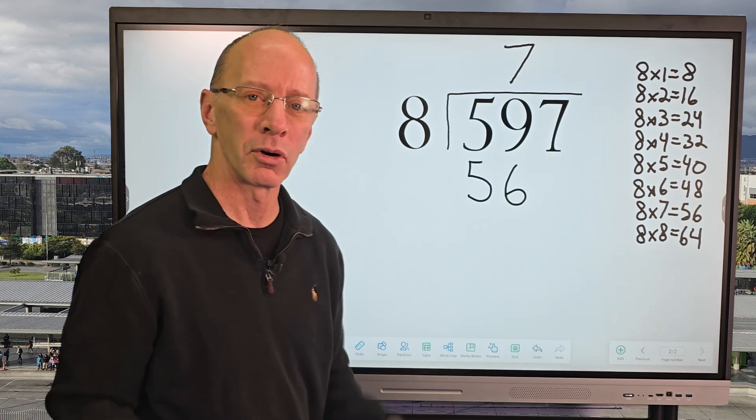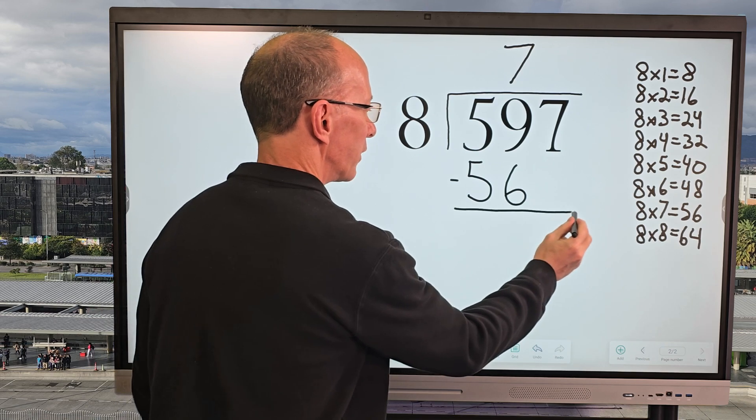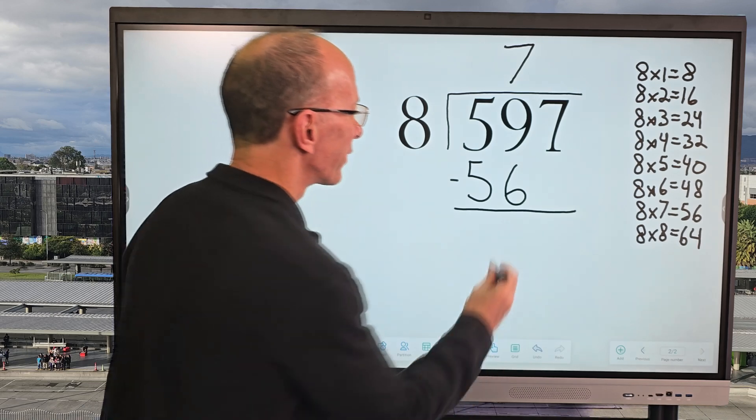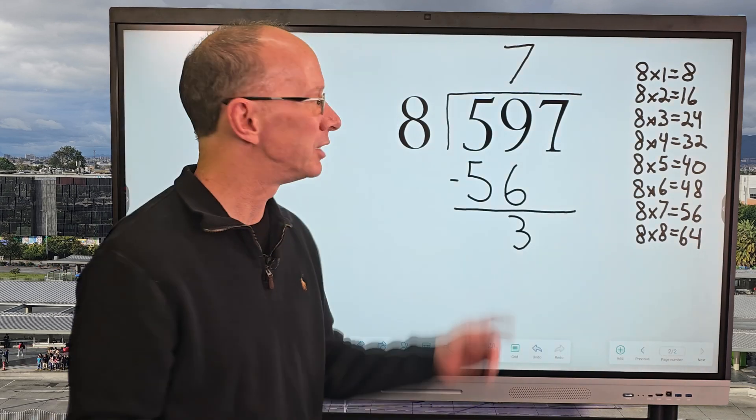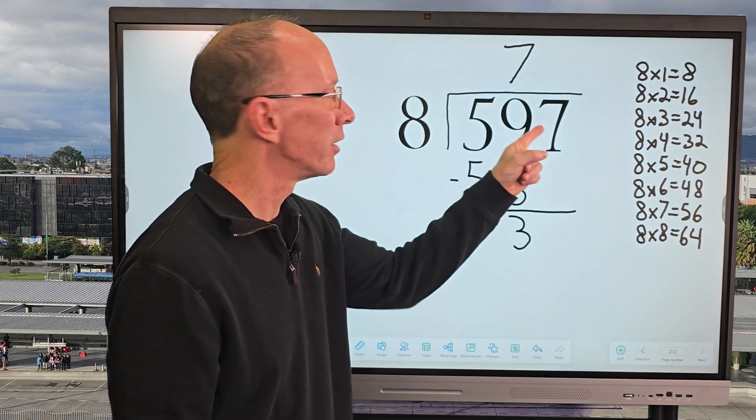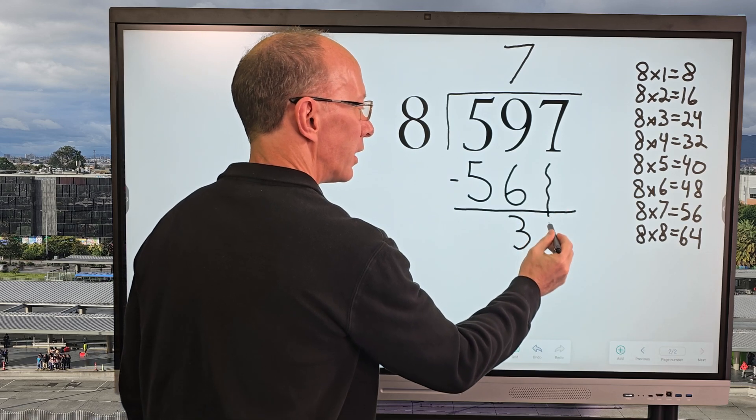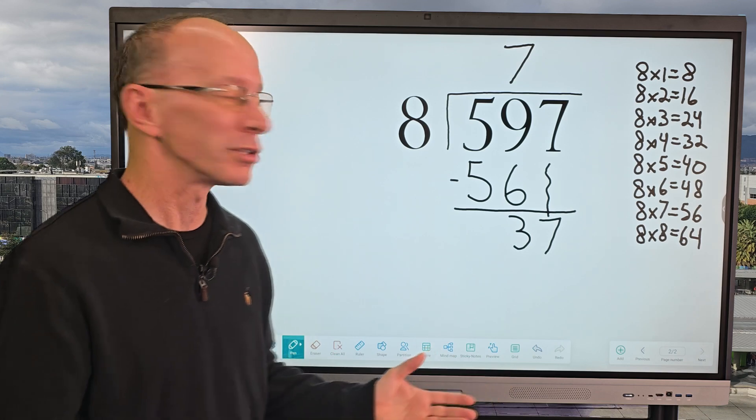And then the next step is I'm going to subtract. I'll go ahead and put the subtraction symbol right here. And then 9 minus 6 equals 3. I put 3 right here. And now our next step is we drop the next number down. And our next number would be 7. So I bring that 7 all the way down, just right down here, and put 7 right there. And then we start the whole process over.